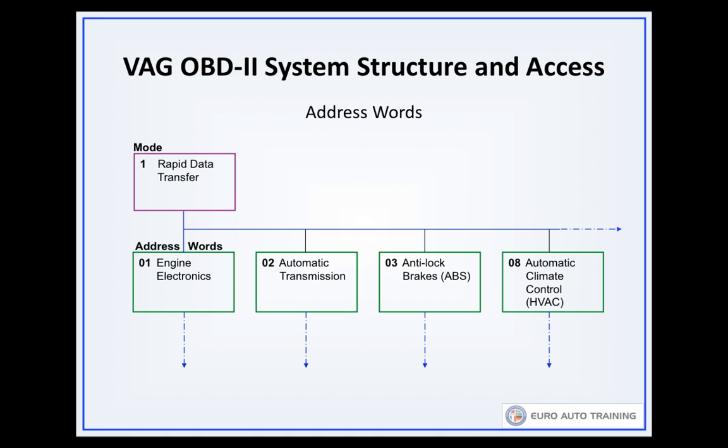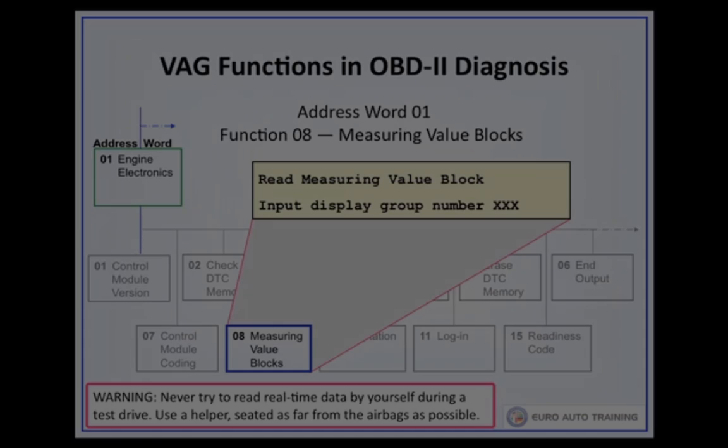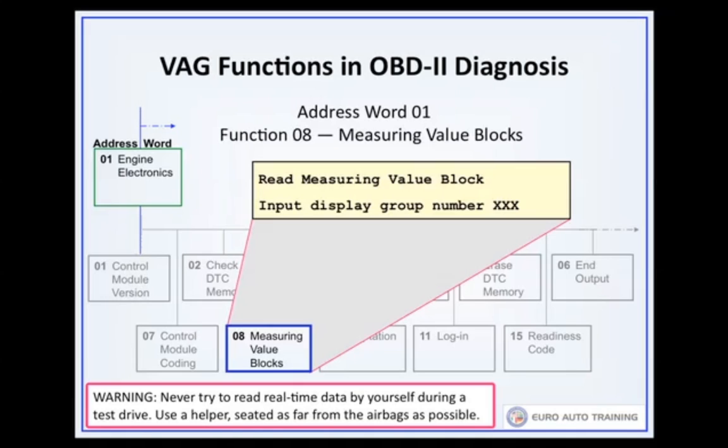This illustration shows the hierarchy and four of the most basic address words used for troubleshooting Volkswagen and Audi models in general. For example, many data groups include a data field for RPM or perhaps engine temperature. These parameters appear often because they are meaningful in so many otherwise unique data groupings.